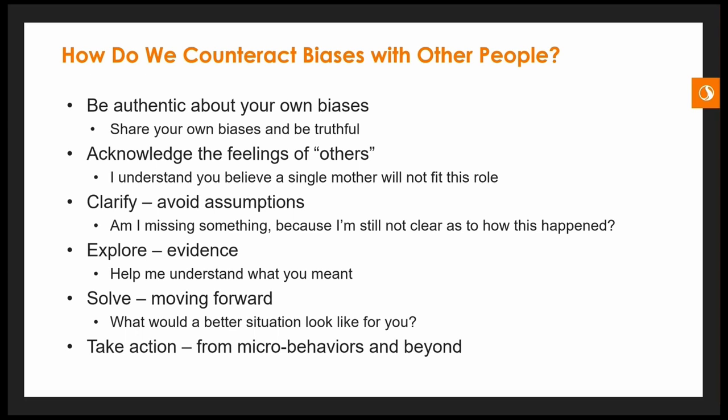Most importantly, take action from micro behaviors and beyond. If you see somebody not behaving in an appropriate manner in the workplace, it's important to say something. If we don't say something, we can never expect it to get better. This starts at the micro behavior level — for example, in a hiring decision, if you see somebody being biased against a candidate for a situation you don't think is right, you've got to say something.